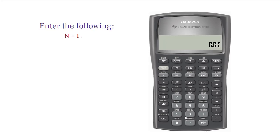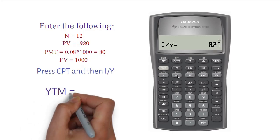N equals 12. PV equals negative 980. Please note that PV value is always entered in the financial calculator as negative. Otherwise, your financial calculator will give you an error message. PMT is 0.08 times 1,000 equals 80. Future value or FV equals 1,000. Now, compute I over Y and you get YTM equals 8.269.